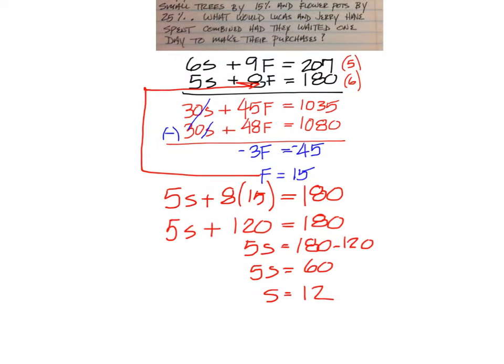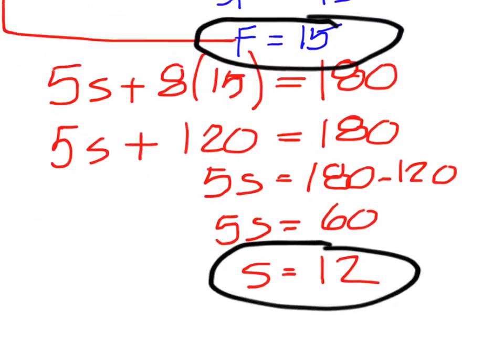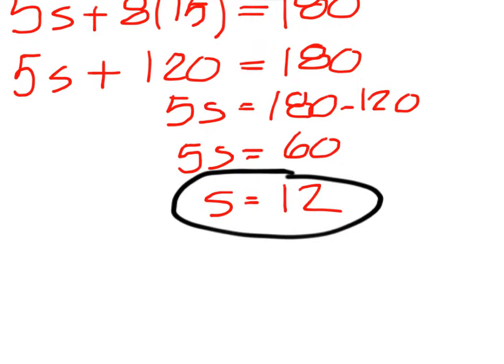So we have the price of each: the flower pot and the small tree. According to the problem, the store raised the prices of the small trees by 15%. So for the small tree there's 12. If I'm going to raise the price by 15%, I can multiply 12 times 1.15. The 1 comes from needing to have the 12 added back in. The 0.15 is 15%. So 12 times 1.15 would be 13.80.